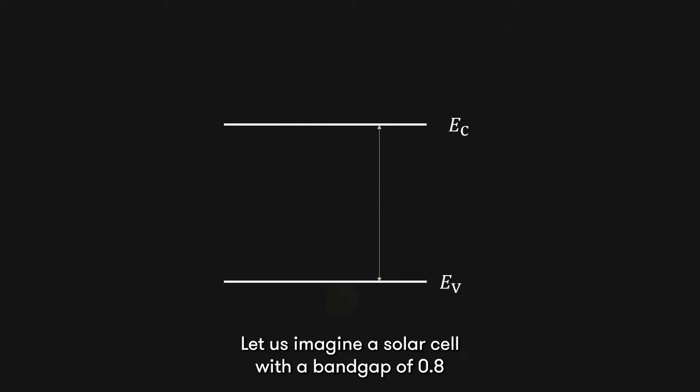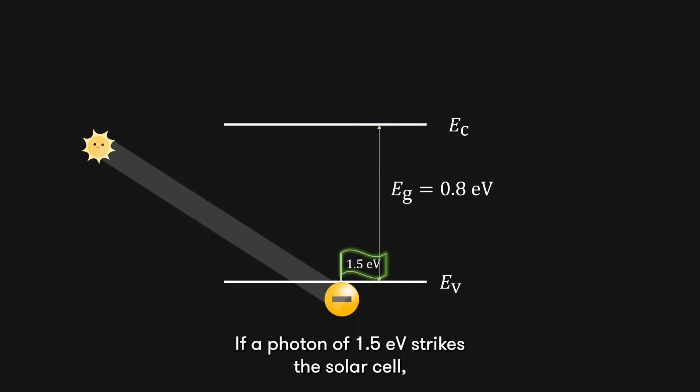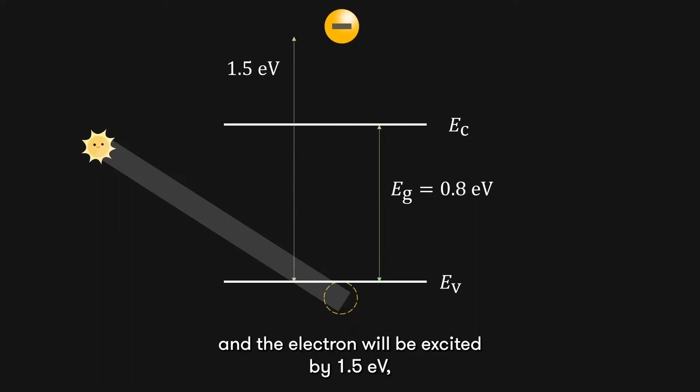Let us imagine a solar cell with a band gap of 0.8 electron volts, which is relatively low. If a photon of 1.5 electron volts strikes the solar cell, all of the energy will be transferred to the electron, and the electron will be excited by 1.5 electron volts, which is much higher than the band gap by 0.7 electron volts.